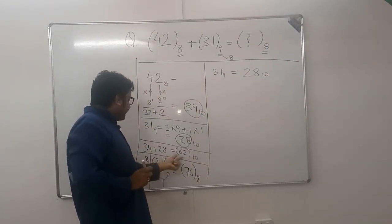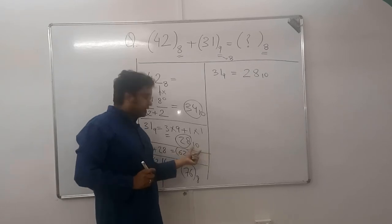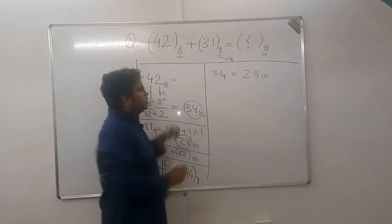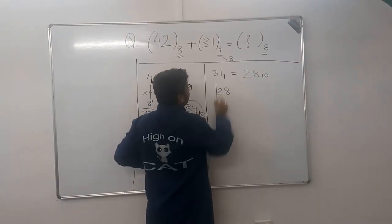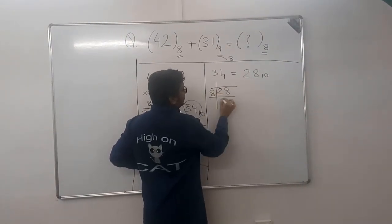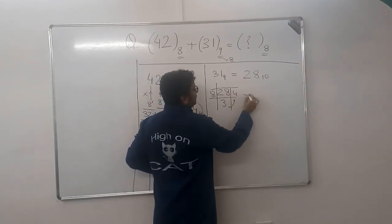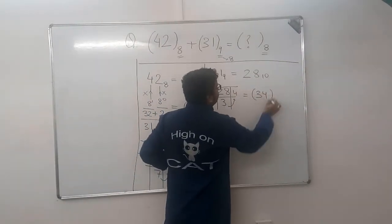Now you know how to convert from base 10 to another base. We did 10 to 8 here. So do 10 to 8 here again. So 28 in base 10 to base 8: 8 into 3 is 24, remainder 4. 8 into 0 is 0, remainder 3. Reverse read, so this is 34 in base 8.